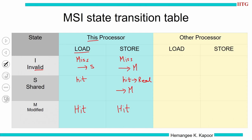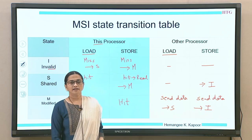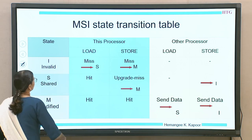For other processors' actions: if another processor loads (sends bus read) while we are in invalid, we have no block — do nothing. If another processor loads while we are in shared, no action needed. If another processor stores (sends bus read X) while we are in shared, we must invalidate our block and move to state I — no data to provide. From state M, if another processor reads, we send data and change to S. If another processor writes from M, we send data and move to I.